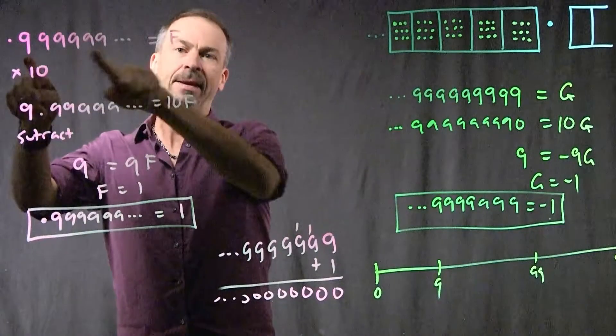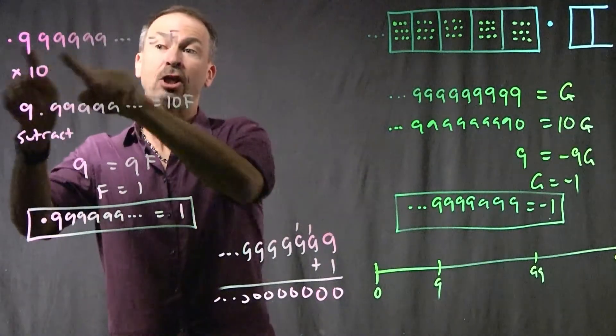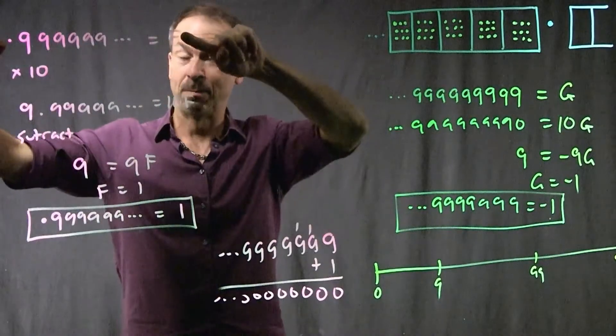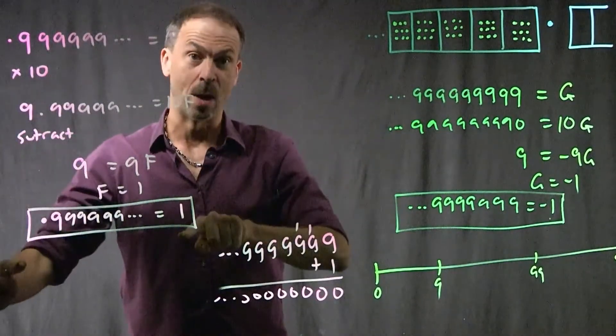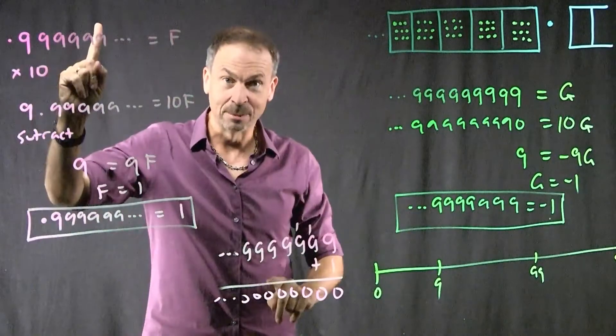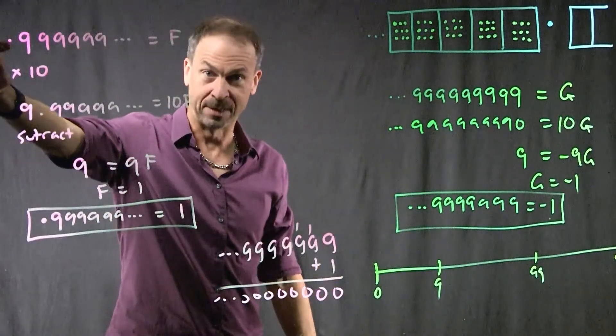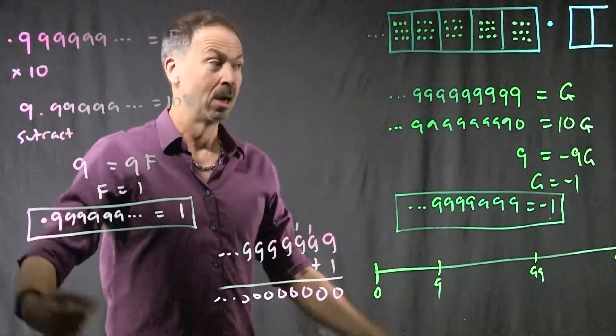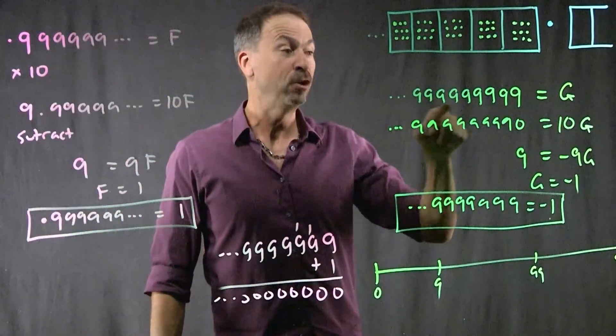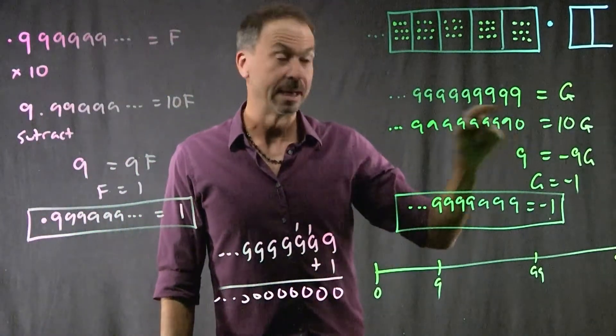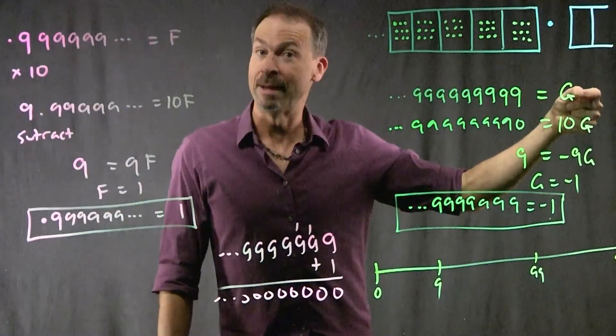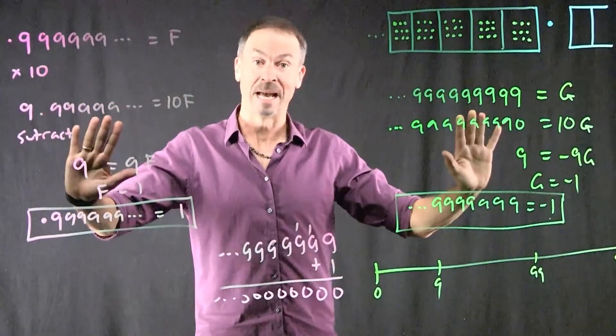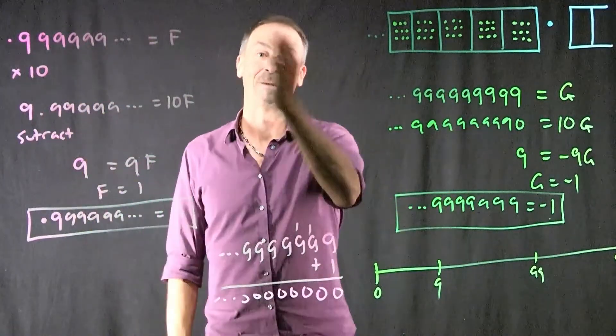Think about what we did. I started this argument by giving it a name. I basically said, I choose to believe it has an answer. Let's give it a name. If you choose to believe it has an answer, then the answer has to be 1. All this argument has proved, if you choose to believe this quantity is meaningful and has an answer, then that answer has to be 1. All I've done over here is said, if you choose to believe this quantity is meaningful and has an answer, then that answer has to be negative 1.